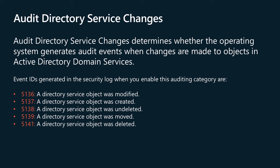The Audit Directory Service Changes policy determines whether the operating system generates audit events when changes are made to objects in Active Directory domain services. Auditing of directory service objects can provide information about the old and new properties of the objects that were changed. Audit events are generated only for objects with configured system access control lists (SACLs), and only when they are accessed in a manner that matches their SACL settings. Some objects and properties do not cause audit events to be generated due to settings on the object class in the schema.